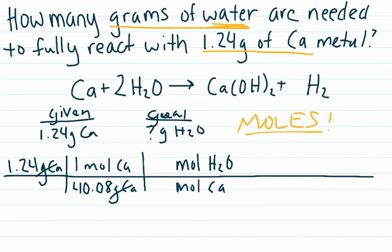We look at our balanced chemical equation for the coefficients in front of calcium and water. Calcium doesn't have a coefficient, which means that it has one mole, and the coefficient in front of water is 2, so 2 moles of water. Now we've converted from moles of calcium to moles of water.